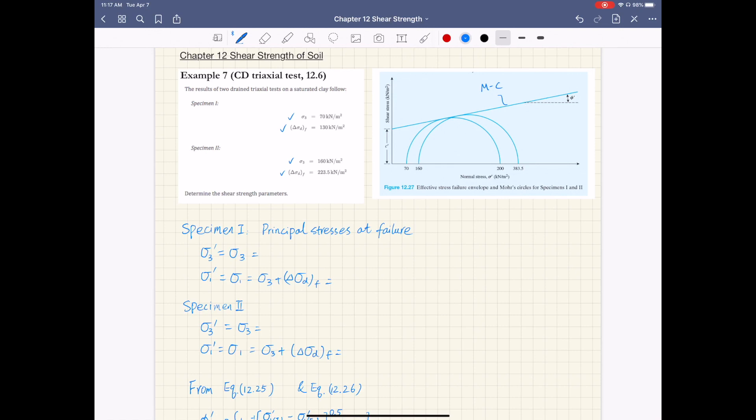We notice that there is a C' term. There is an intercept with the shear stress axis. So you can tell from this Mohr-Coulomb failure envelope, this is perhaps an over-consolidated clay specimen.